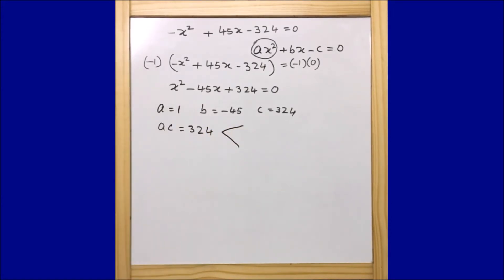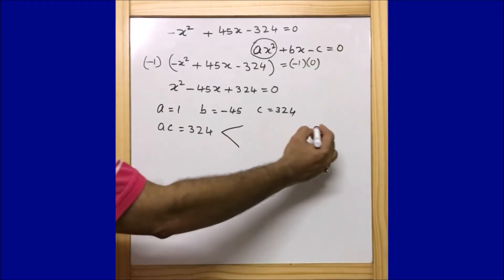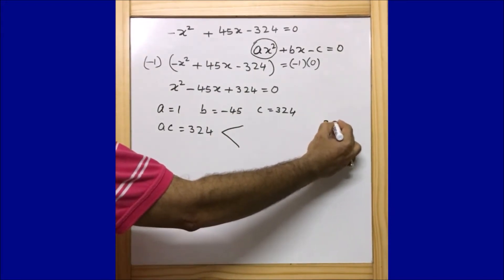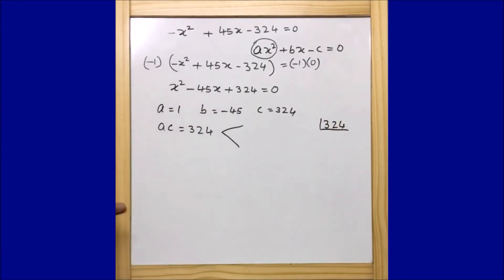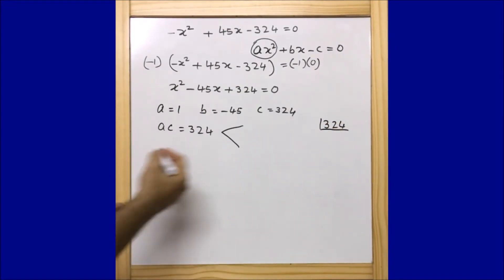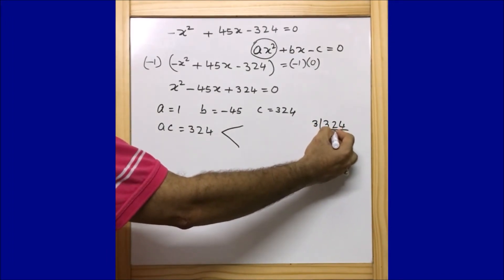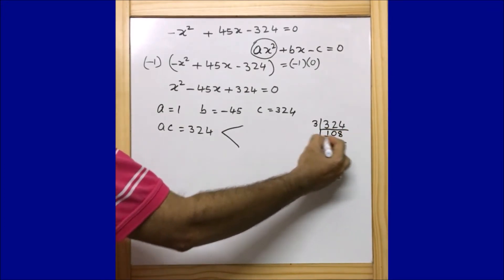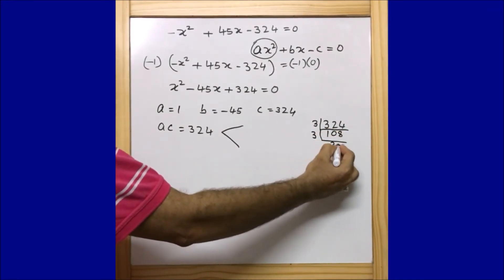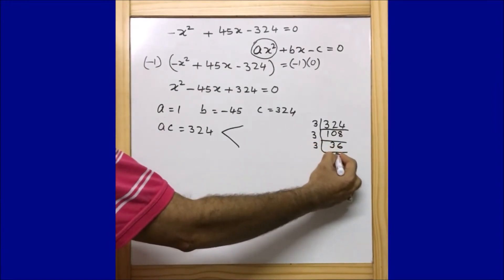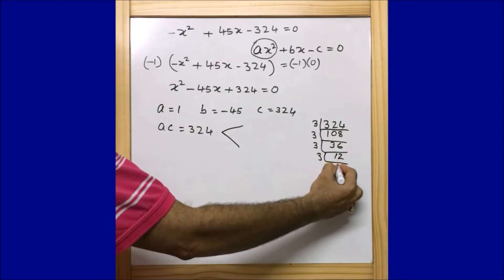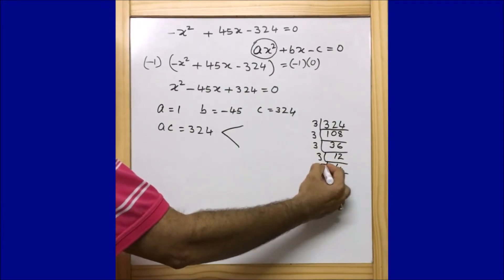We are going to find two values whose product is 324 and whose sum is minus 45. Let us first find the factors of 324: we get 3, 9, 18, 36, 12, 4, and 2 among its factor pairs.